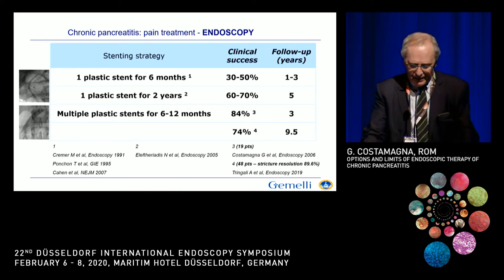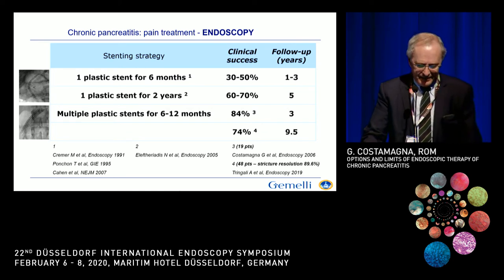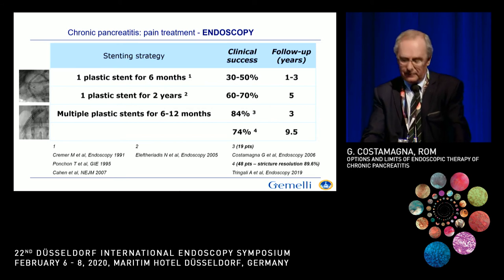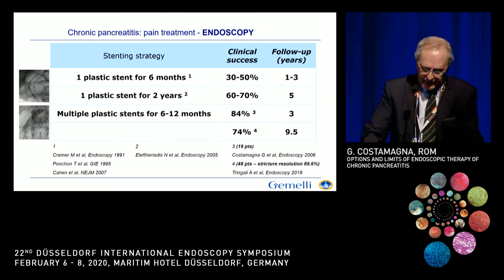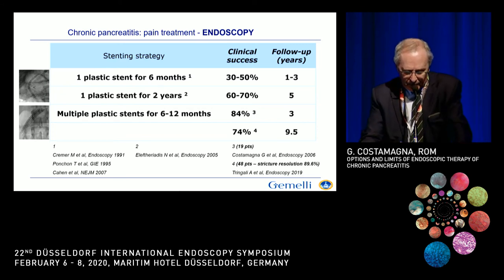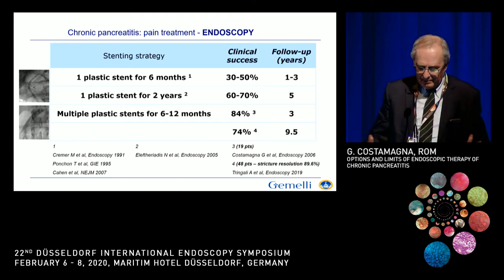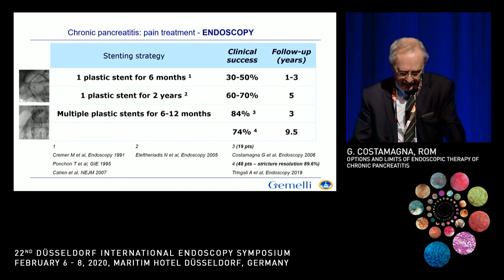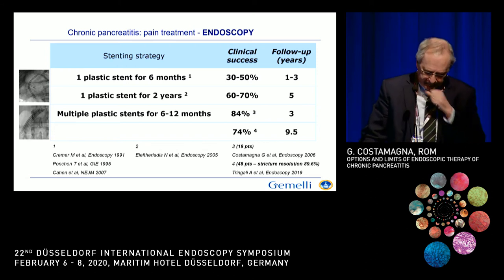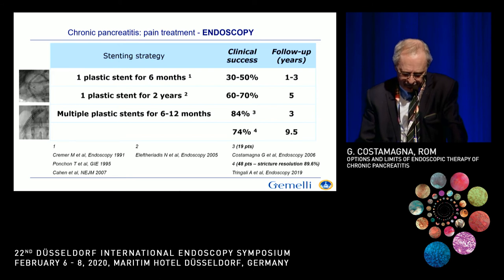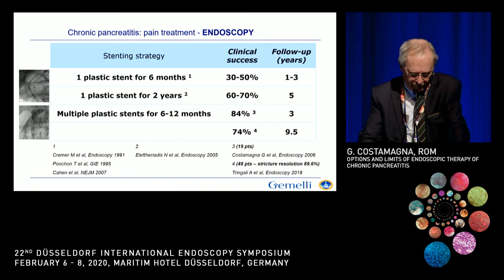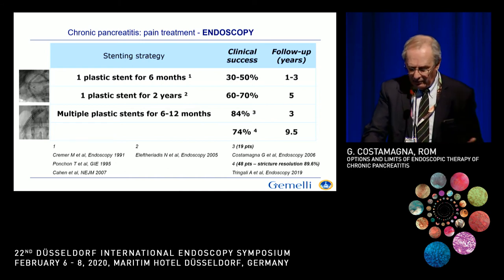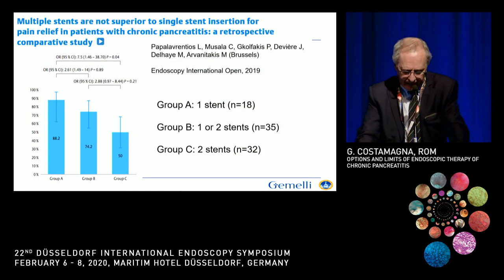What about strictures? Strictures may be treated with stents. If you leave one plastic stent for six months, you get rid of pain in 30 to 50%. If you leave a large-bore plastic stent for two years, you get rid of the pain in 60 to 70% of cases. We showed that putting more stents, in the subgroup of patients with unrelenting pancreatic strictures after stenting with one stent, can be useful — we reported a success of 84%. More recently, increasing the cohort to close to 50 patients with a very long follow-up showed that a more aggressive approach can be more successful.